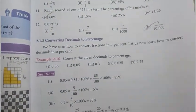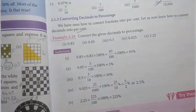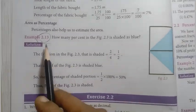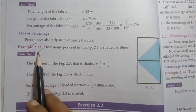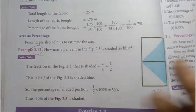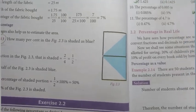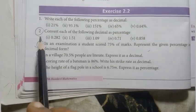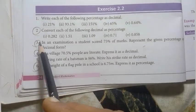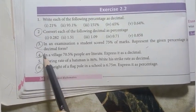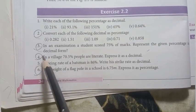Objective type questions — work out. Then example 2.10 is important. Page number 34, example 2.13 is important. Exercise 2.2: questions 1, 2, 3, 4, and 6 are important questions.